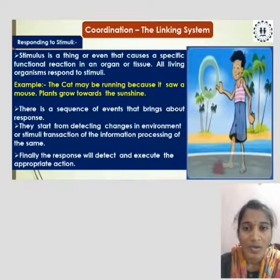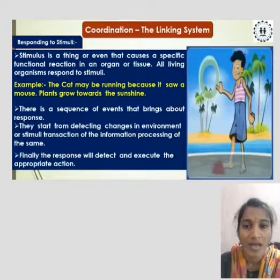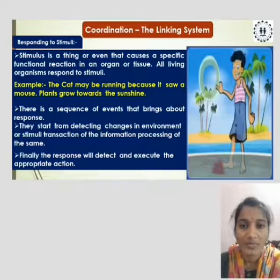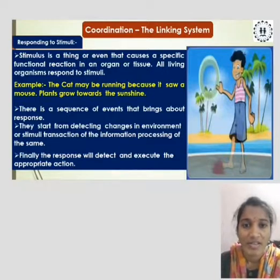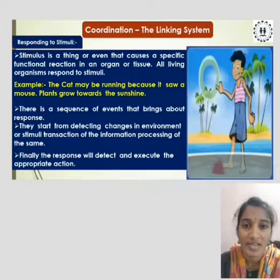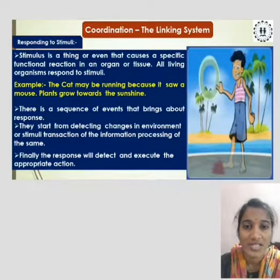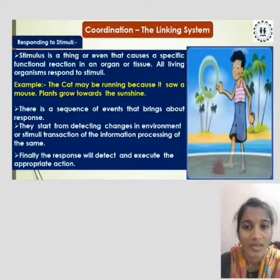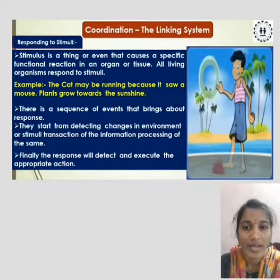For example, a cat may be running because it saw a mouse. Plants grow towards the sunshine. There is a sequence of events that brings about a response. They start from detecting changes in the environment or stimuli, transmission of the information, and processing of the same. Finally, the response will detect and execute the appropriate action.